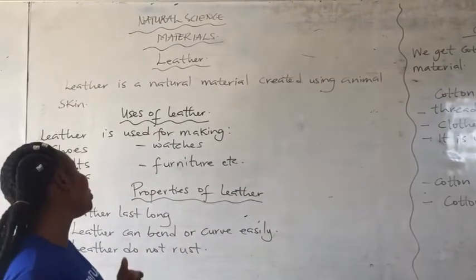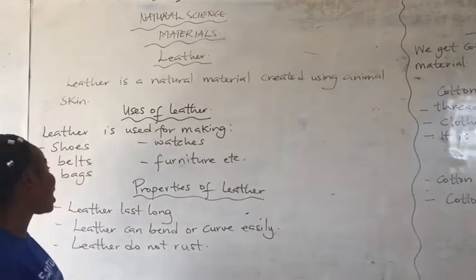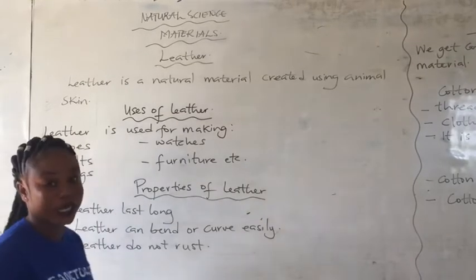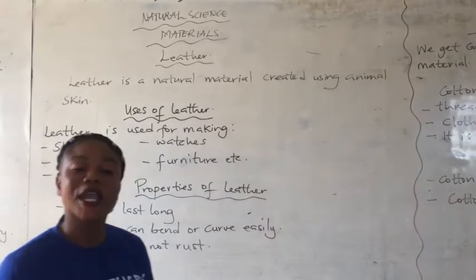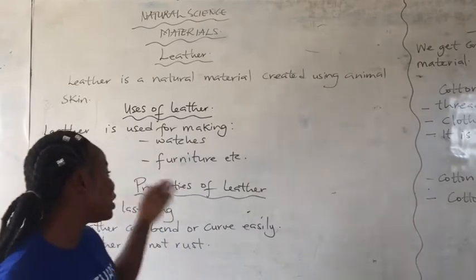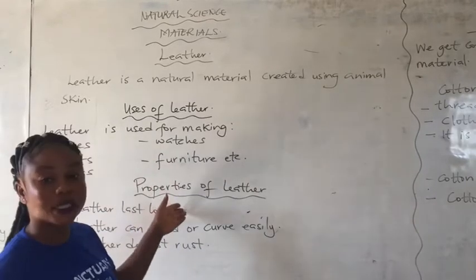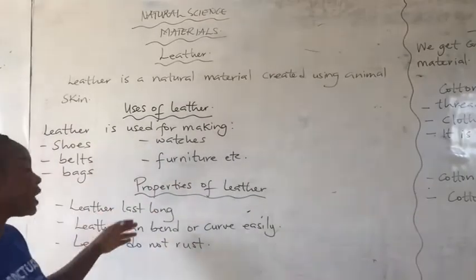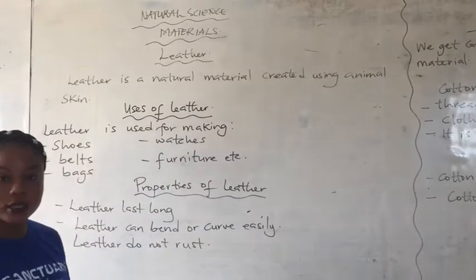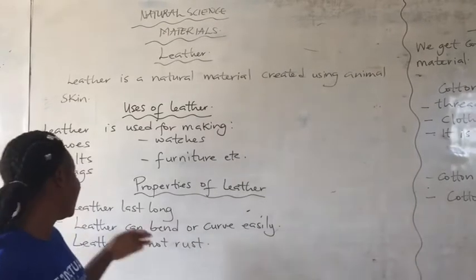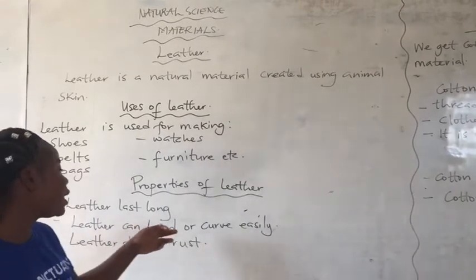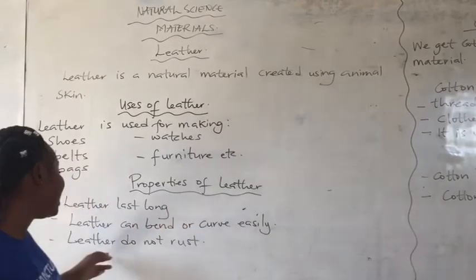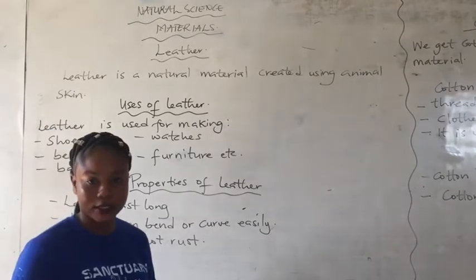The shoes we wear, the belts we use, our bags, our watches and furniture — some are made from leather. Now let's move to the properties of leather. Leather lasts long. Leather can burn easily. Leather does not rust.